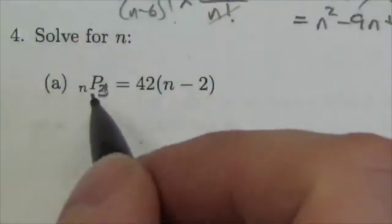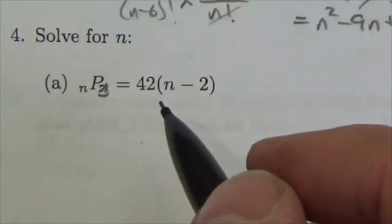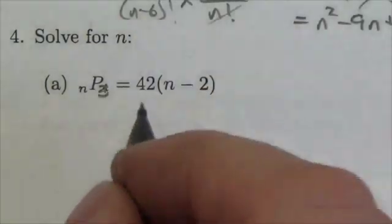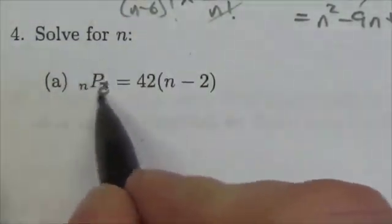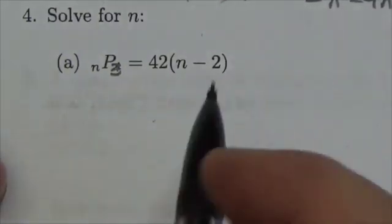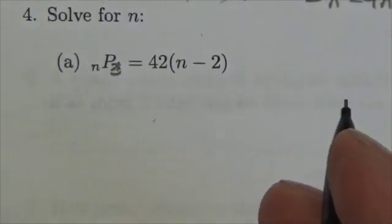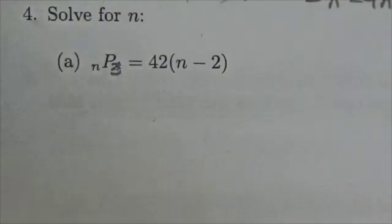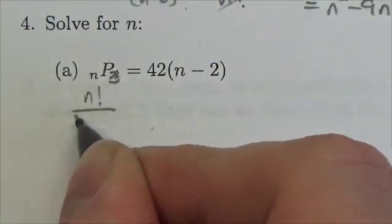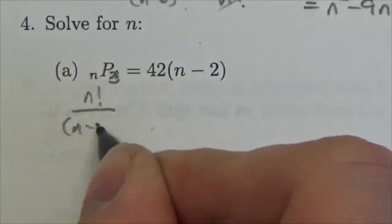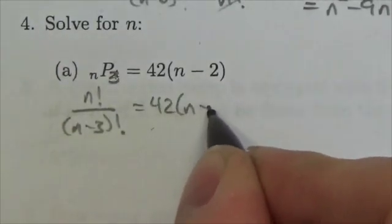We're going to solve this permutation equation. I'll show you a couple of different ways of doing this. To solve this algebraically, I need to convert NP3 into factorial notation because that's something I have control over algebraically. So this is going to be n factorial over (n minus 3) factorial, which will equal 42 times (n minus 2).